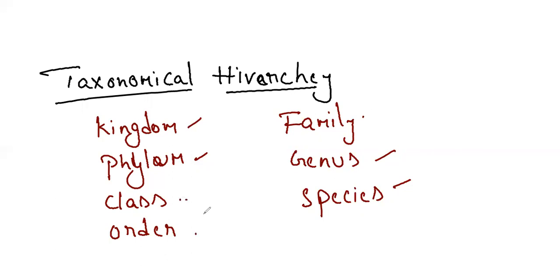The main problem many will have is with class, order, and family. I'll tell you a very easy mnemonic for this: 'The teacher came to the class and ordered the students to bring their family.' So the family members are genus and species — homo sapiens. You can remind: the teacher came to the class and ordered the students to bring their family tomorrow.